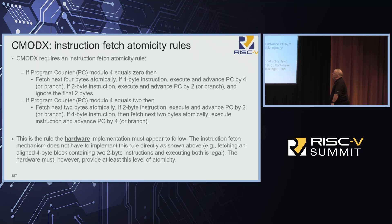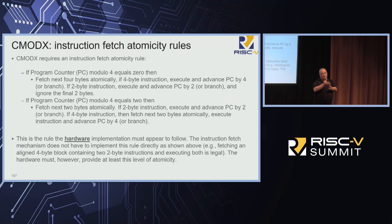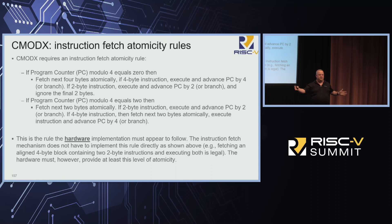Now the hardware side: if your program counter is on a four-byte boundary, you grab the next four bytes atomically. If that's a four-byte instruction, execute it and move the PC four bytes or branch. If it's a two-byte instruction, execute it, move two bytes, throw away the other two or branch. If you're on a two-byte boundary, pull the next two bytes atomically; if that's a two-byte instruction fine, but if it's a four-byte misaligned instruction you move two bytes, grab the next two bytes atomically, glue them together and execute. This is the minimum atomicity in your instruction fetch required to not tear instructions in half.